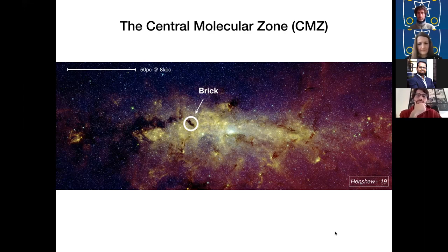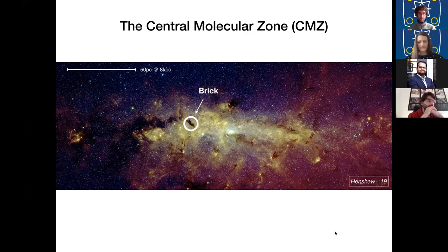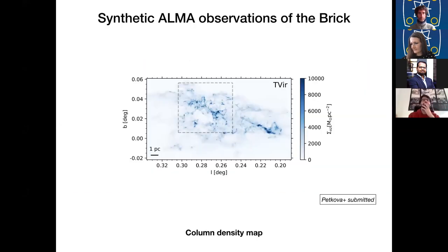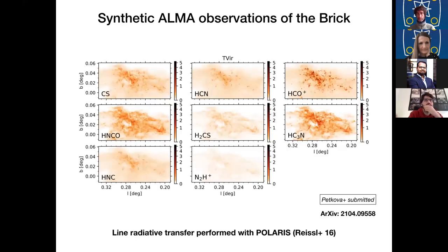And in addition, we have existing observations from cycle zero of the Brick. The cloud has been very extensively studied within the literature. In order to compare one of our simulations, the one that represents the Brick to the real Brick, we need to do some further processing. Because what we get from a simulation is a three dimensional volume and we have density information for each point in space. But of course this is not what you observe with a telescope. What you observe with a telescope is the light emitted from this cloud.